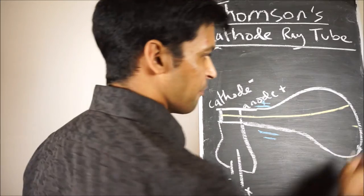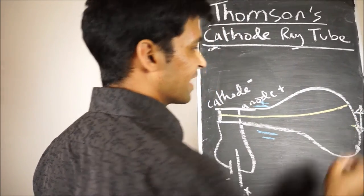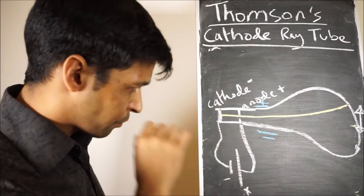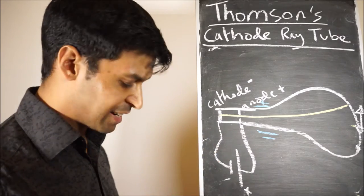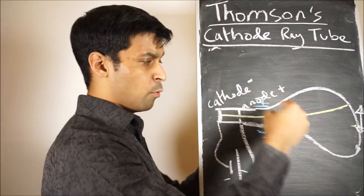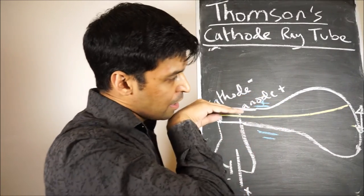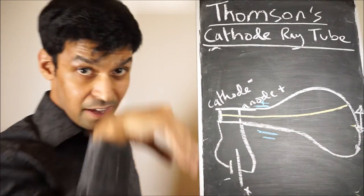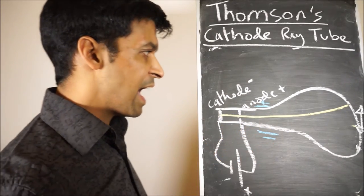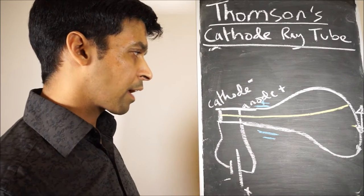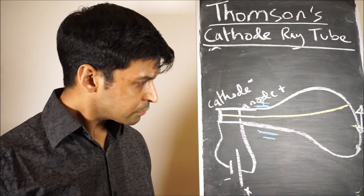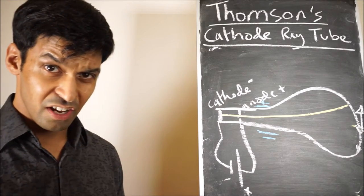This deflection can be measured — they measure the angle. Before they do that, he also played around with magnetism. He found that if he had a north pole on one side and a south pole behind — kind of a three-dimensional arrangement — the beam would deflect the other way. So he tweaked it and played around with both the electric field and the magnetic field.